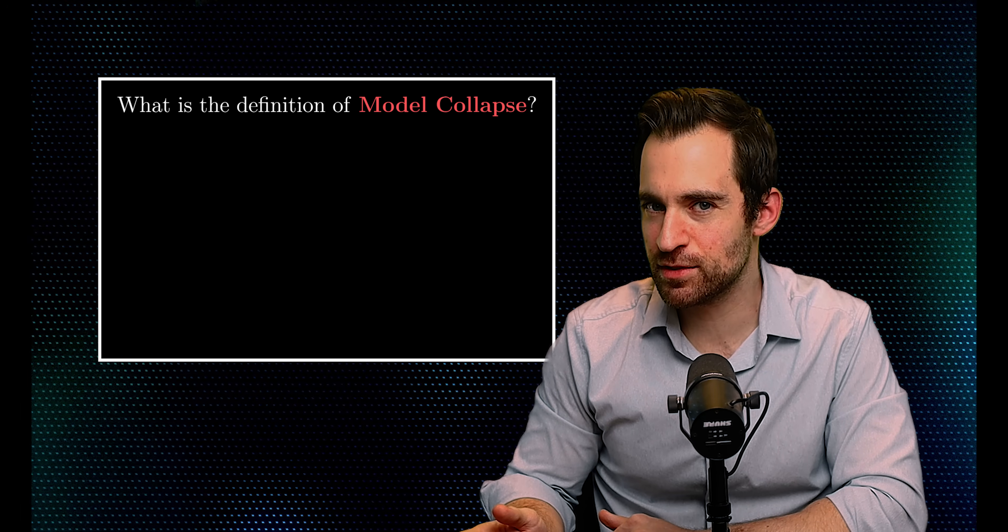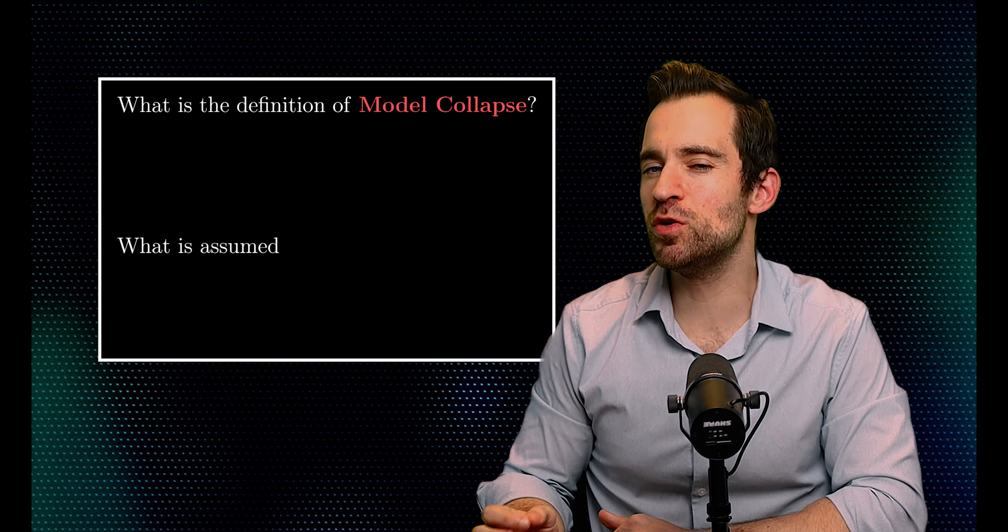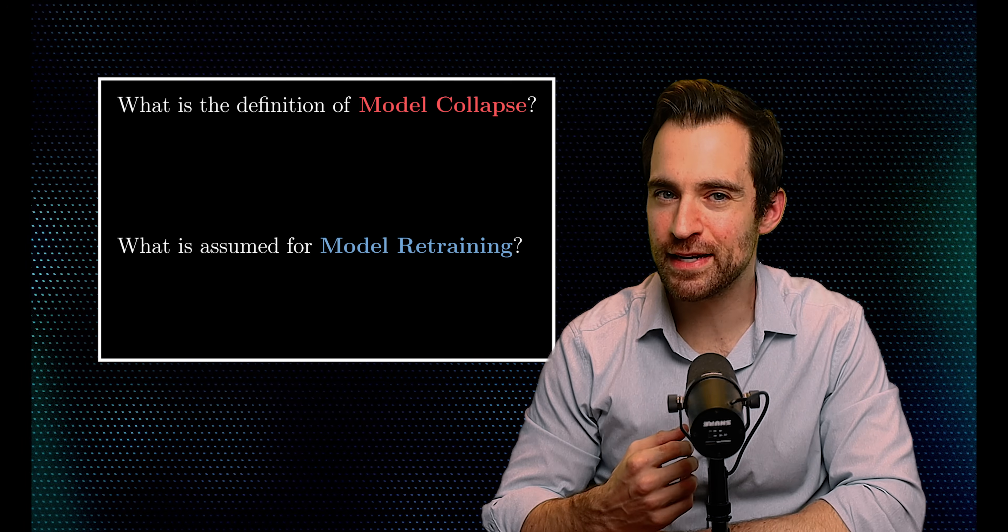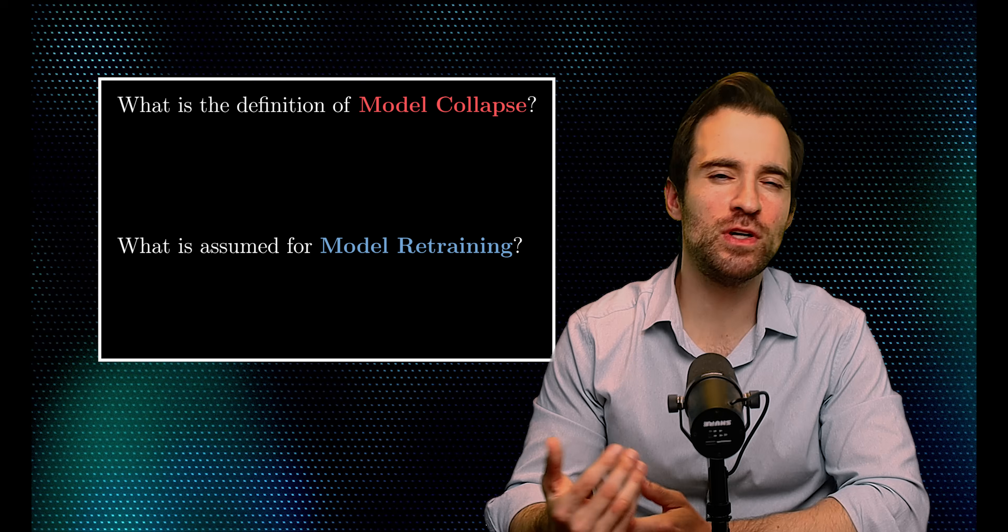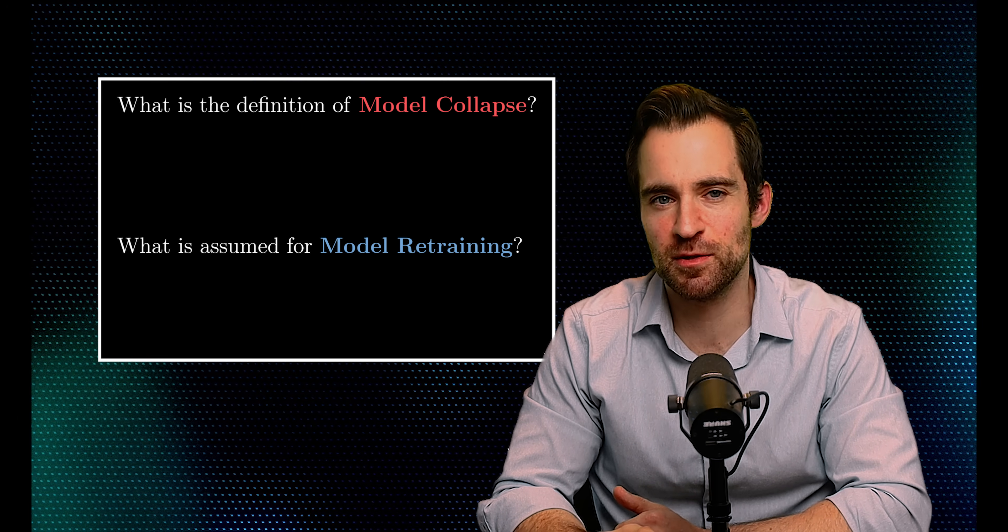So, to reveal some pockets of scientific consensus, I find the following two questions to be helpful. First, what is the definition of model collapse? And second, what is assumed for model retraining? My claim is that papers mostly disagree on how to answer these two questions. But once you answer them for yourselves, much of the scientific disagreement disappears.